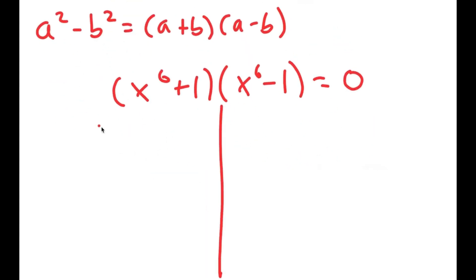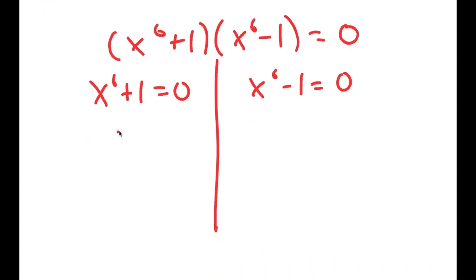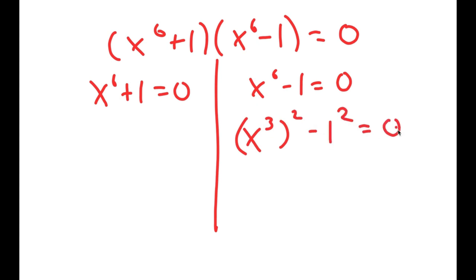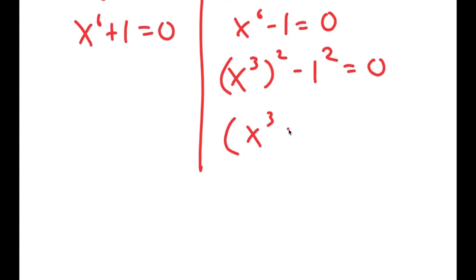So this gives me two equations: x to the power of 6 plus 1 equals 0, and x to the power of 6 minus 1 equals 0. Now I'm going to do the same thing again. I'm going to rewrite x to the power of 6 minus 1 equals 0 as x to the power of 3, squared, minus 1 squared is equal to 0. So I can use this property again and get x to the power of 3 plus 1 times x to the power of 3 minus 1 is equal to 0.